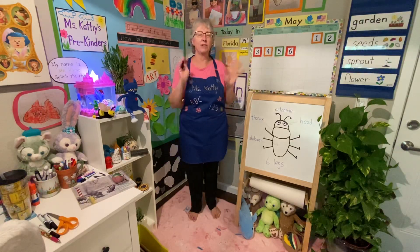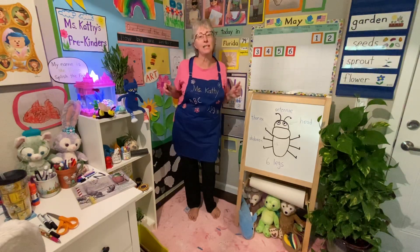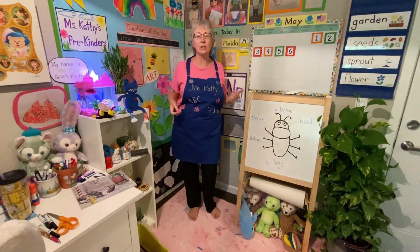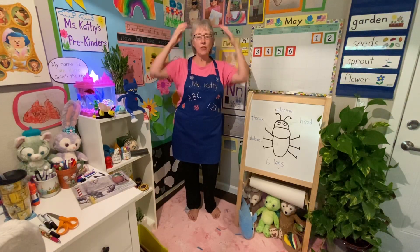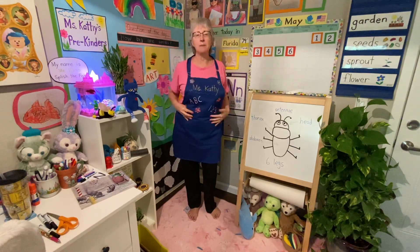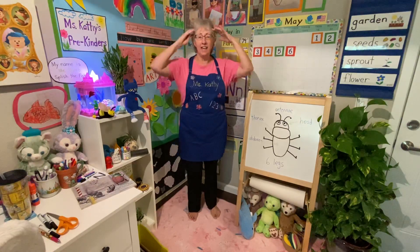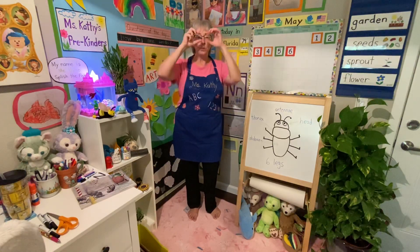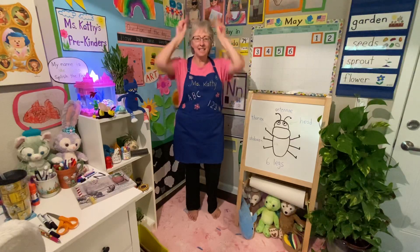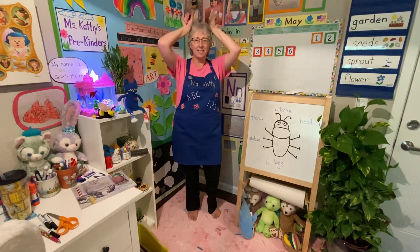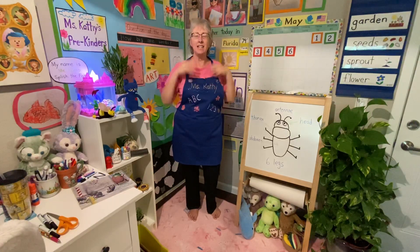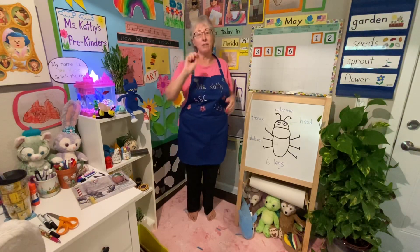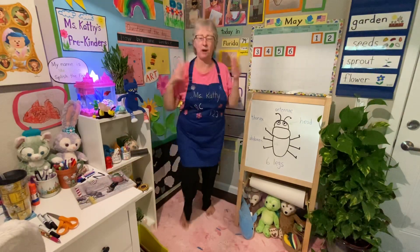Let's do a little song today! It's kind of like 'Head Shoulders Knees and Toes.' It goes: head, thorax, abdomen, abdomen — head, thorax, abdomen, abdomen — two eyes, six legs, and antennae two — head, thorax, abdomen, abdomen. I have to put this clicker down because it's bothering me.